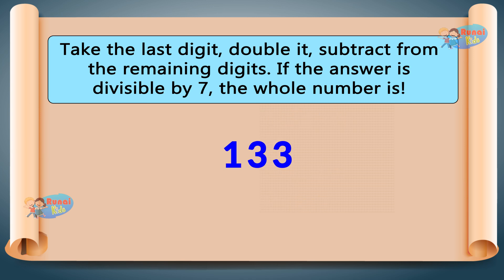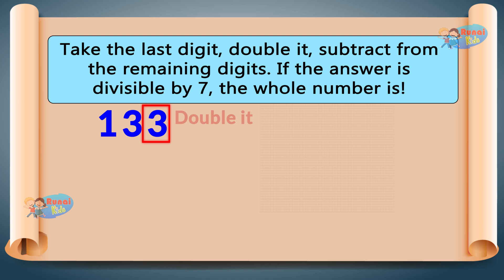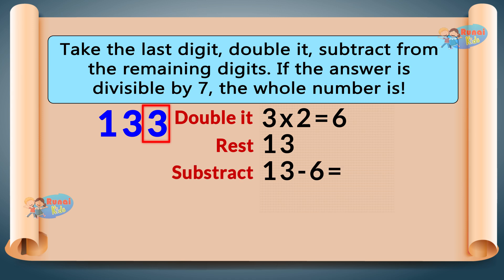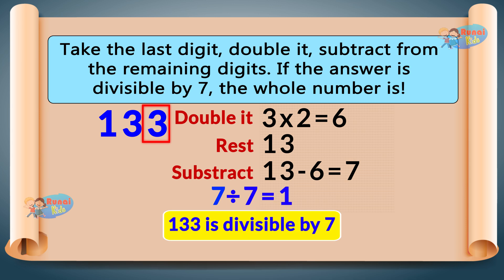133 — last digit is 3. Double it: 3 times 2 equals 6. Rest is 13. Subtract: 13 minus 6 equals 7. Since 7 divided by 7 equals 1, 133 is divisible by 7.